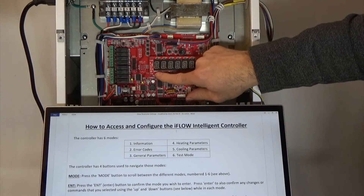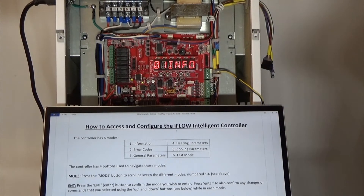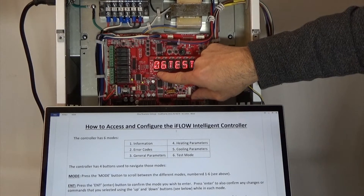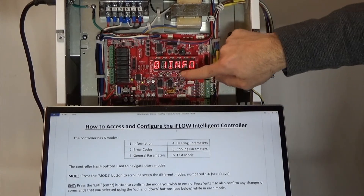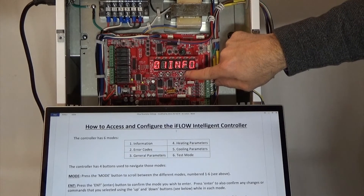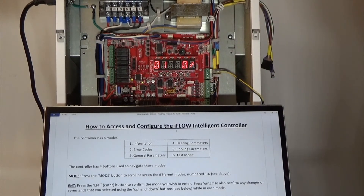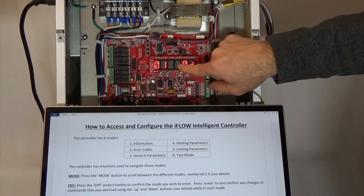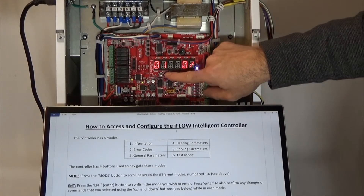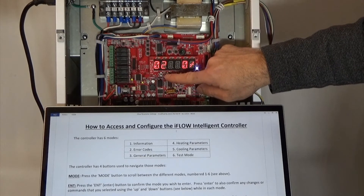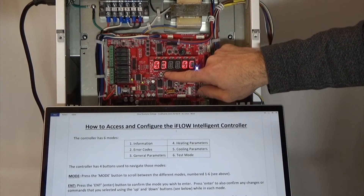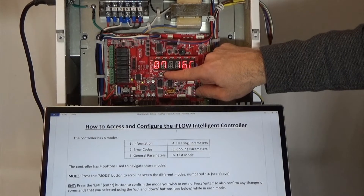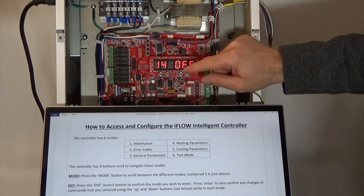Let's look at how you get into them. For example, let's say we want to look at all the information that the iFlow is now seeing. We go to information mode — mode button to mode one — and we press enter to enter the actual mode. Now we've entered mode one and we're at parameter one, with the value on the right. We can scroll up using the up arrow to see parameter two, three, four, five, and so on in info mode.